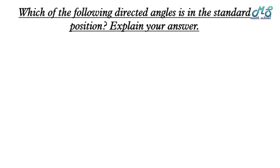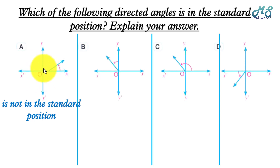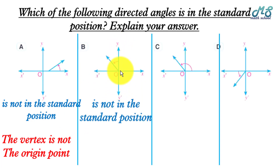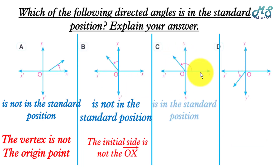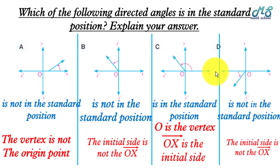Example: which of the following directed angles is in standard position? Figure A is not in standard position because the vertex is not the origin point O. Figure B is not in standard position because although the origin point is the vertex, the initial side is not ray OX. Figure C is in standard position because O is the vertex and ray OX is the initial side. Figure D is not in standard position because the initial side is not ray OX. The correct answer is figure C.